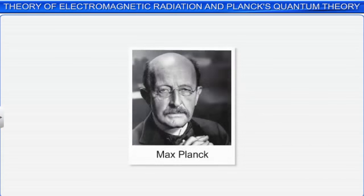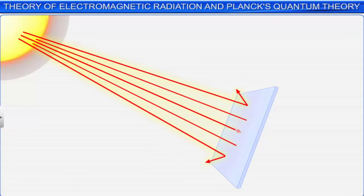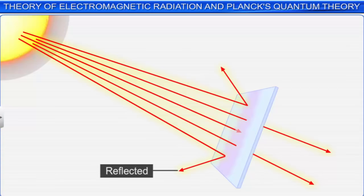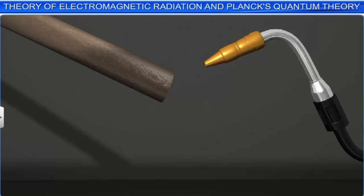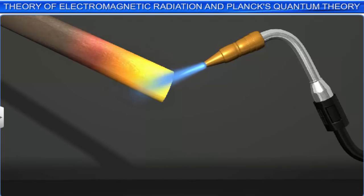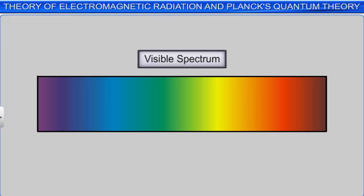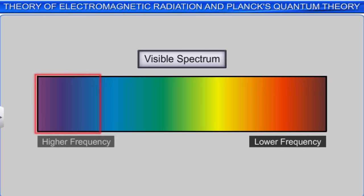First, let us understand the phenomenon of black body radiation, given by Max Planck in 1900. In general, when radiation strikes any surface, part of it is reflected, part is absorbed, and part is transmitted. For example, when an iron rod is heated, at first it turns red. As the temperature is further increased, it becomes yellow, then white light, and finally turns blue. This shows that radiation is emitted in the order of increasing frequency, with red light being of lower frequency and blue light of higher frequency in the visible region.